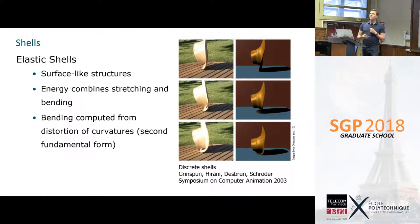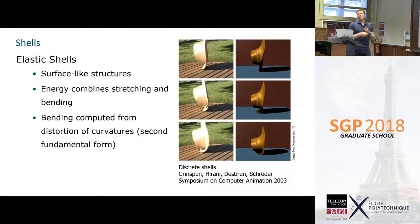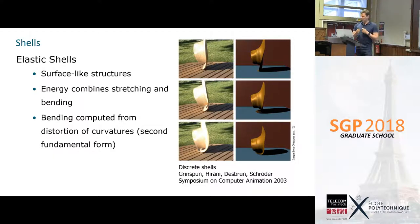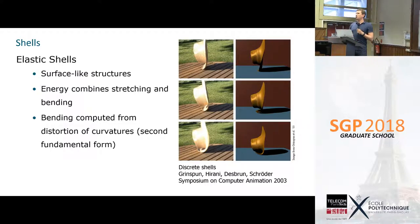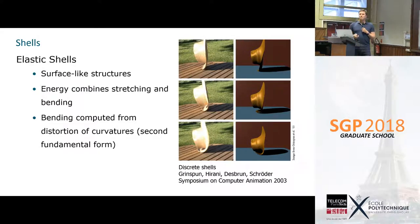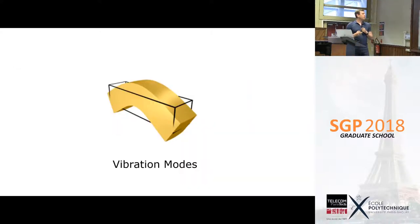In geometry processing, we often look at surface-like structures called shells, and in this case the energy combines stretching and bending. Stretching is what we've looked at, but we also need a bending component for shell-like structures. For example, if I take a piece of paper and roll it, this does not cause any stretching, but still there's a degree of freedom that needs to be handled — this is done by a bending energy that measures how the curvature changes, i.e., how the second fundamental form of the surface changes.